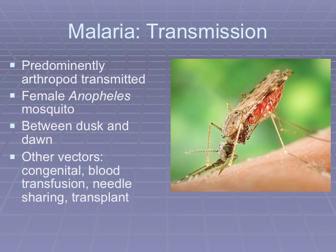Malaria is predominantly arthropod transmitted, but you can also get malaria from a blood transfusion, organ transplant, or needle sharing. The vector is predominantly the female Anopheles mosquito, which is a nighttime biter. So if you're in the tropics and get bitten by a mosquito during the day, you might come down with dengue fever or yellow fever. If you let your guard down and don't use your mosquito net at night, you risk malaria. Transmission modes include transplant, blood transfusion, and needle sharing.